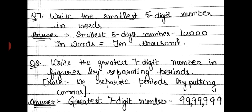The next question is: write the smallest 5-digit number in words. The smallest 5-digit number is 10,000, and in words we write it as ten thousands.